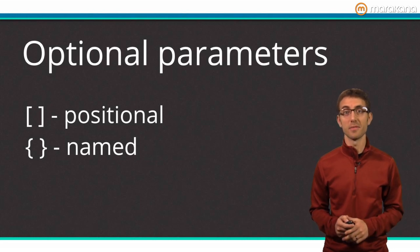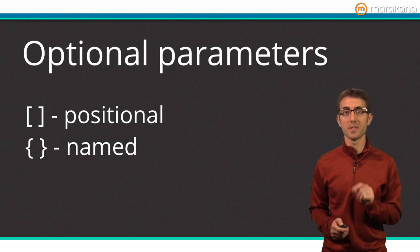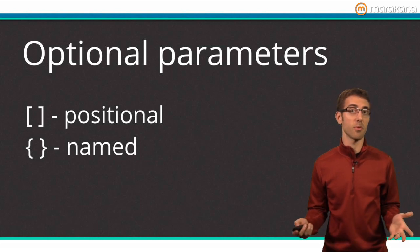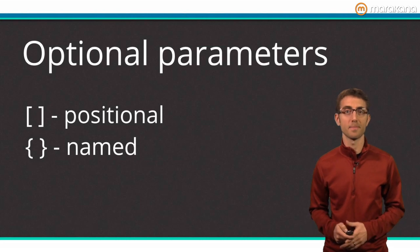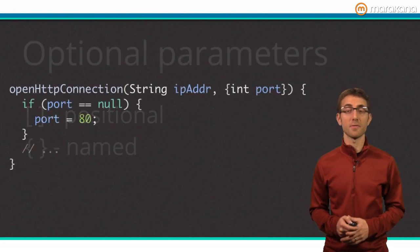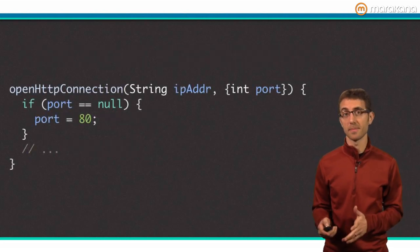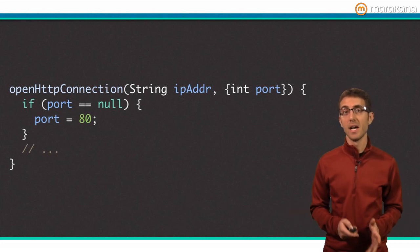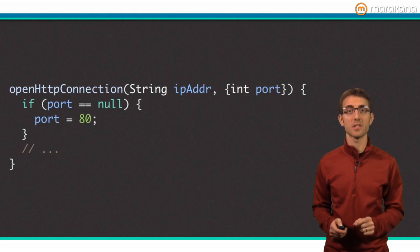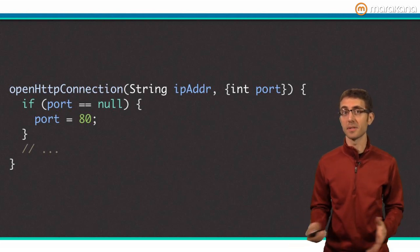There's yet another benefit from the use of optional parameters. But first, the setup. Sometimes there's an obvious or default answer for a parameter. Only on occasion does it make sense to pass in something more unique. For example, here's a function that opens an HTTP connection. The first parameter, IP address, could be anything, so it's required. However, almost all HTTP connections use port 80, so the second parameter can be optional.